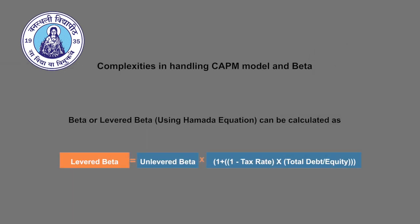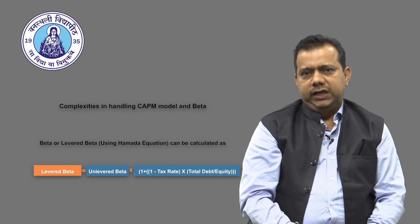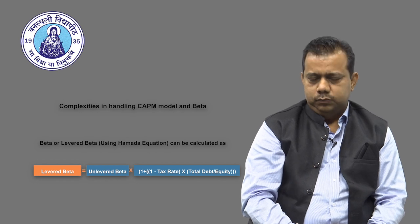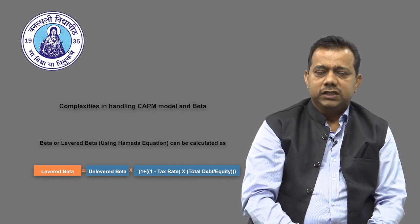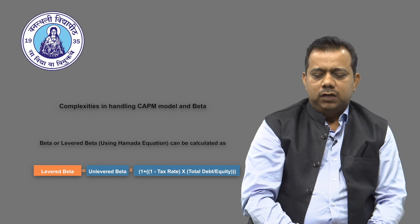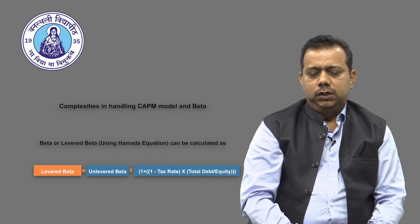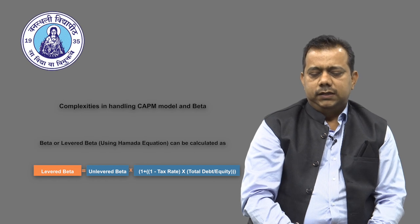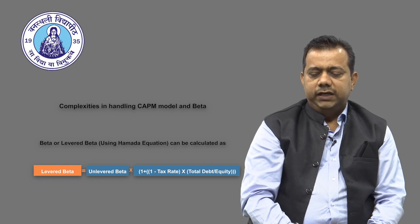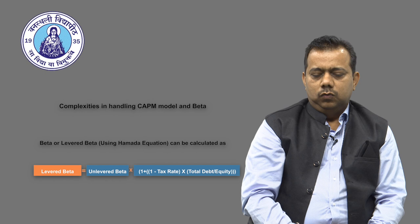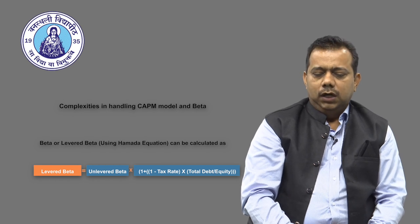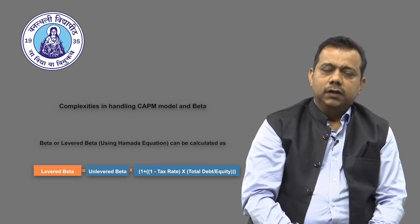Now let us look at how unlevering of beta is done. Unlevered beta is the beta of a company with no debt on its books; levered beta is the beta of a company with debt. This process of levering and unlevering is also known as the Hamada equation: Levered Beta = Unlevered Beta × [1 + (1 − Tax Rate) × (Debt/Equity)]. This gives the debt-equity ratio a weightage in calculating the levered beta.